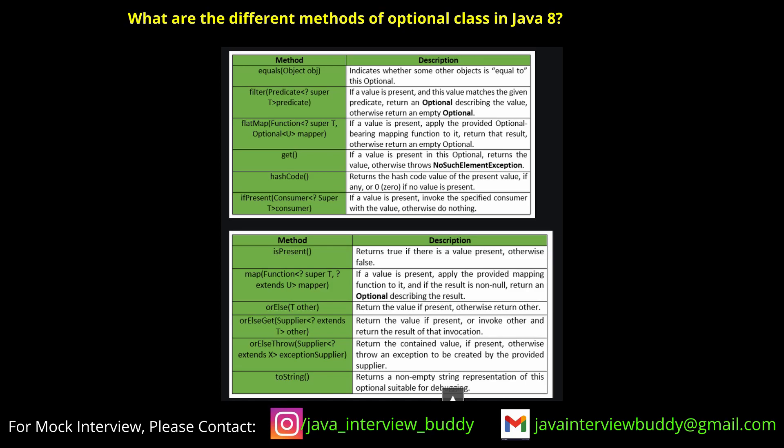So what are the different methods of Optional? Different methods like Optional.of(), Optional.isPresent() — it will return a boolean if that particular variable is present or not. Then Optional.isEmpty().